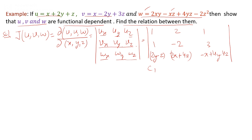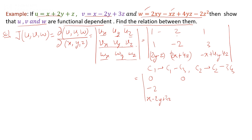We apply column operations: column 1 becomes column 1 minus column 3, and column 2 becomes column 2 minus 3 times column 3. These operations make the first elements of columns 1 and 2 become zero. After reduction, the first column becomes [0, -2, x - 2y + 3z], and the second column becomes [0, -8, 4x - 8y + 12z], and the third column remains [1, 3, 4y - 4z].